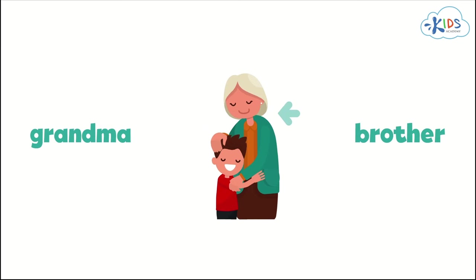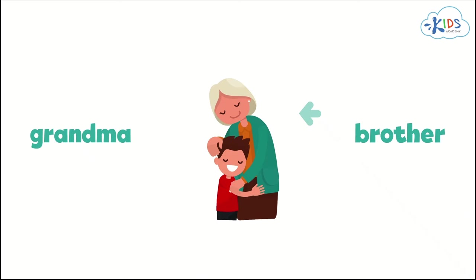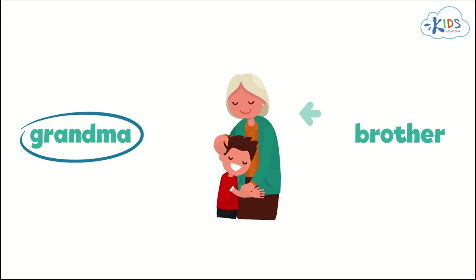In the next row, we see another woman and a boy. This woman has gray hair, which means that she is older. Is she a grandma or a brother? She's a grandma. A brother is a boy, not a woman. Nice work!